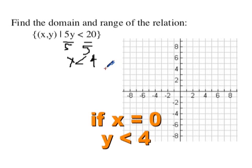x could be 0, y is going to be less than 4. x could be 1,000, y is going to be less than 4. x could be negative infinity, and y is still going to be less than 4. So in this case, the domain is all real numbers.